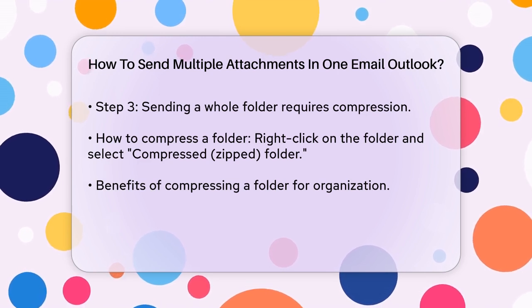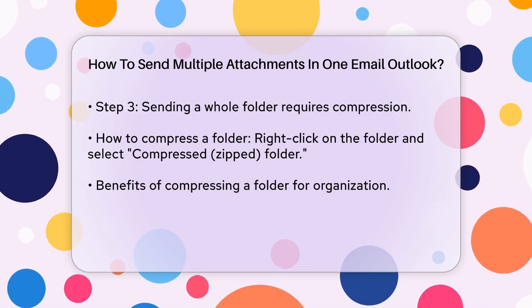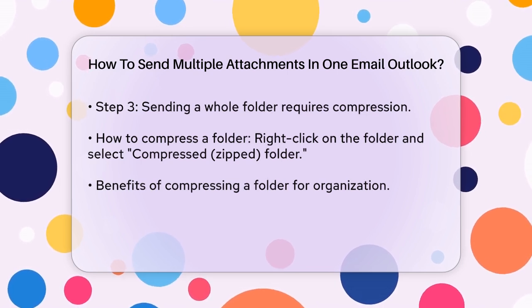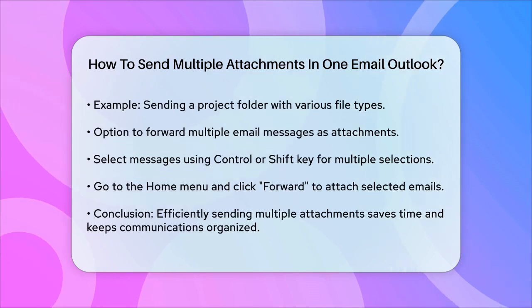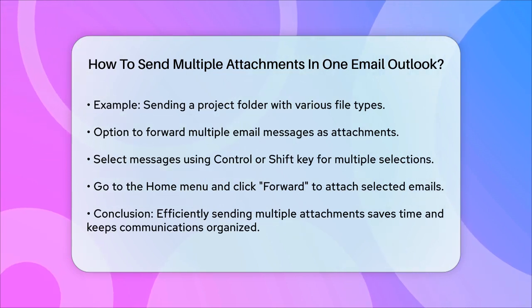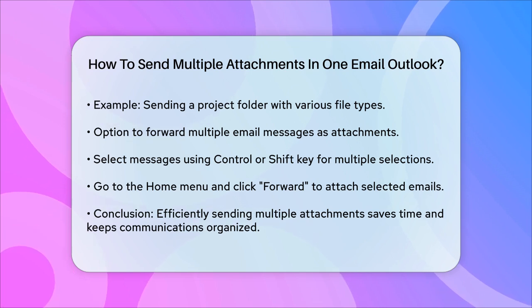In addition to attaching multiple files or a compressed folder, you can also forward multiple email messages as attachments in a single email. To do this, select the messages you want to forward by holding the Control key and clicking on each message, or by selecting a contiguous group of messages using the Shift key. Then go to the Home menu, click Forward, and the selected messages will be attached to a new email.